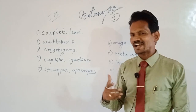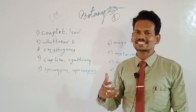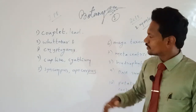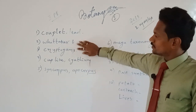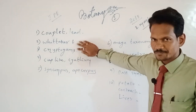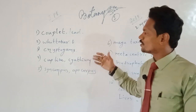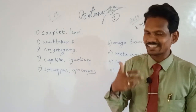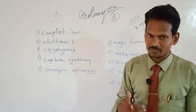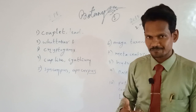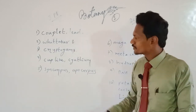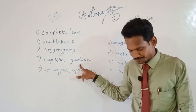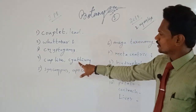Third question: what are the vascular cryptogams? The answer is pteridophytes. Pteridophytes are the vascular cryptogams on this Earth, and they were the first to evolve. That is the answer for this question.